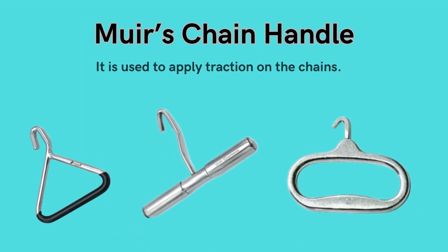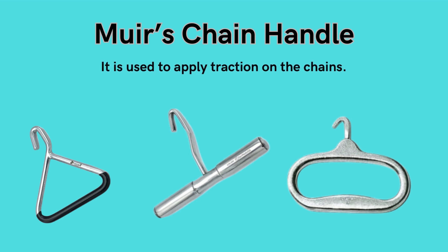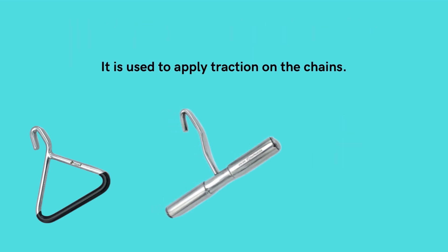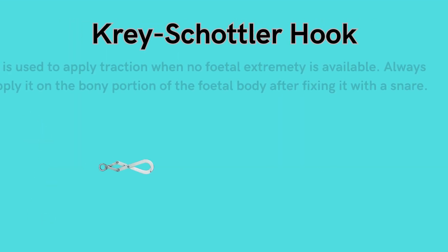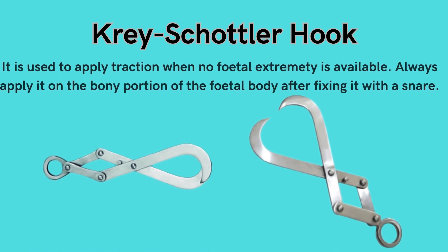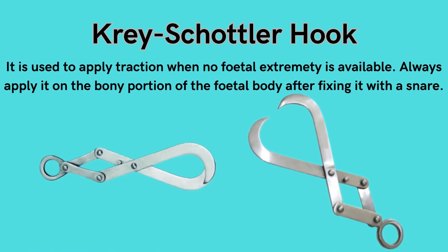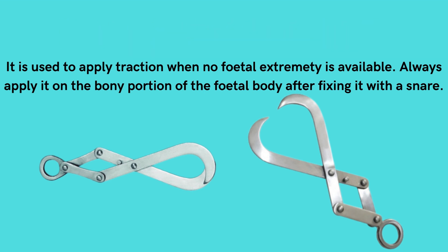Muir's chain handle: used to apply traction on the chains. Cray shotler hook: used to apply traction when no fetal extremity is available. Always apply it on the bony portion of the fetal body after fixing it with a snare.